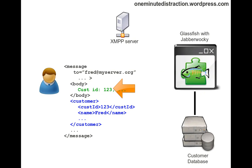There are two parts to this return message. The first part is the body, where we convert the customer information into a string and put it in the body of the message — so if you are using a chat client like Pidgin, this will appear in the chat area. The second part is that the component converts the customer record using JAXB into XML and embeds that in the reply message as well. The idea is that if a program — rather than a user — is sending the inquiry, the program can take this reply message and use JAXB to convert from XML back to a Java object to be consumed by the application.